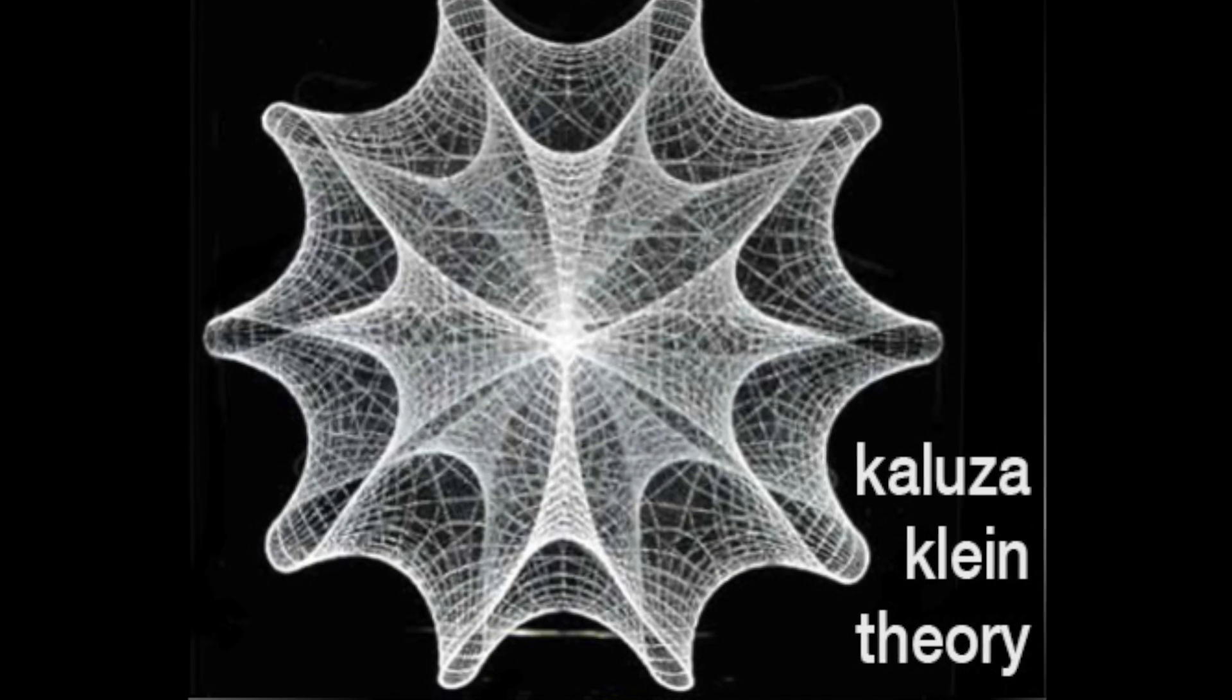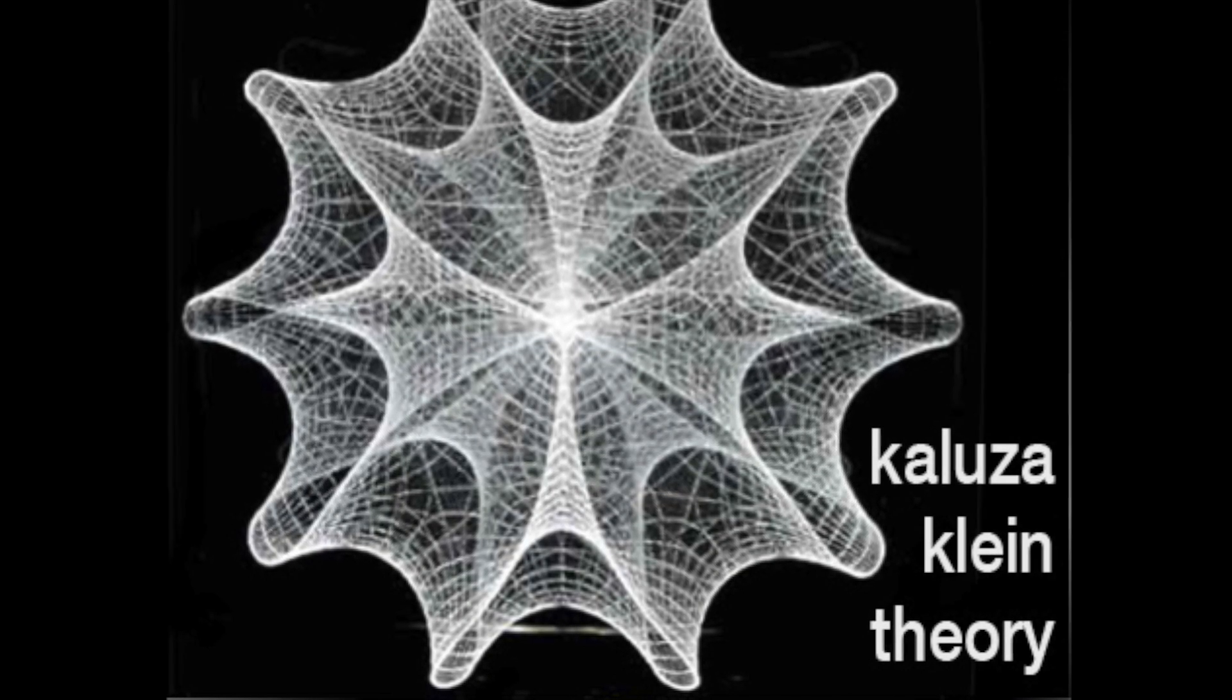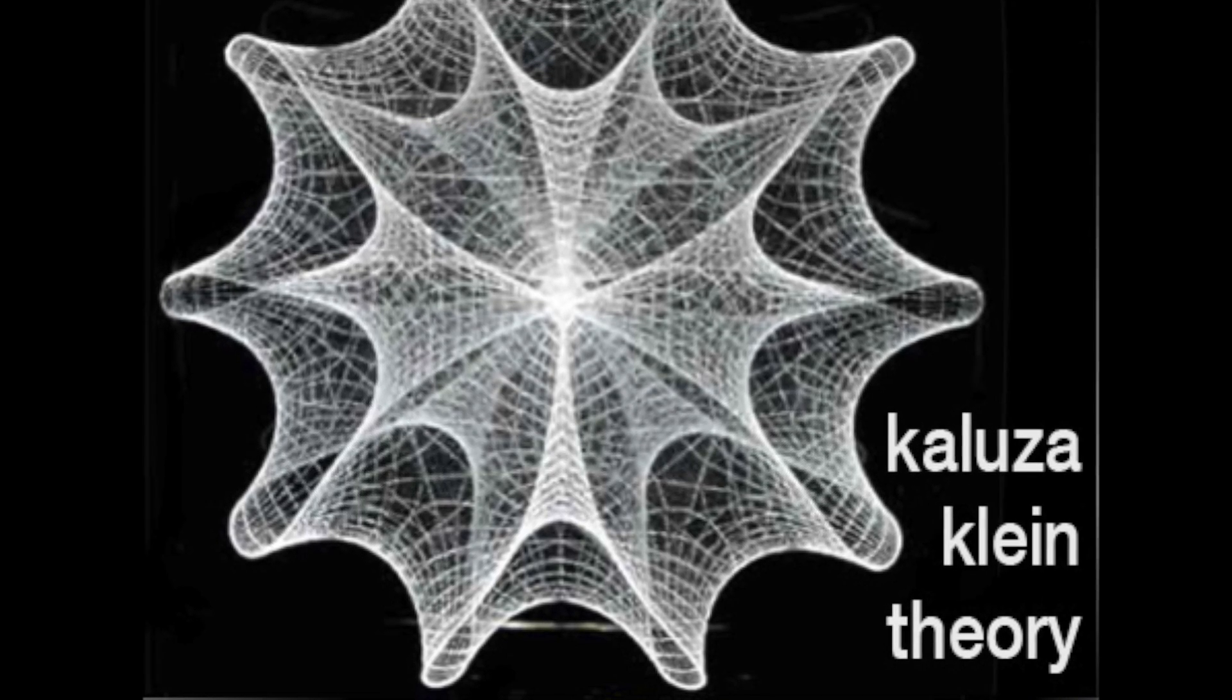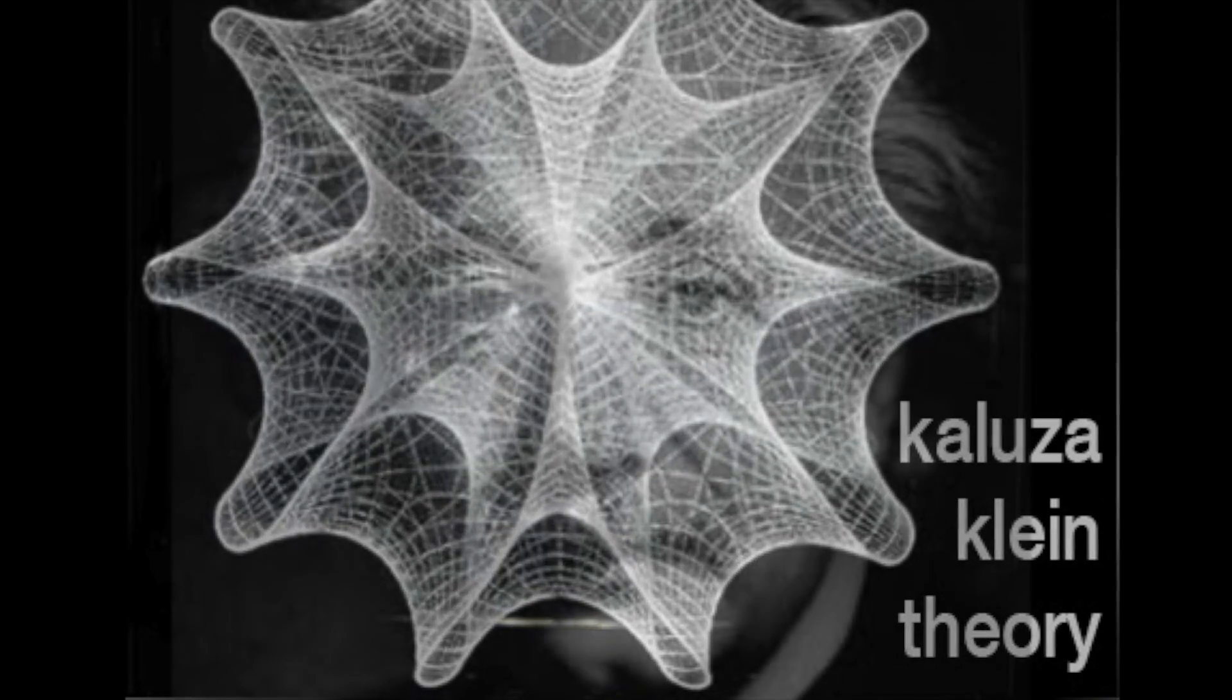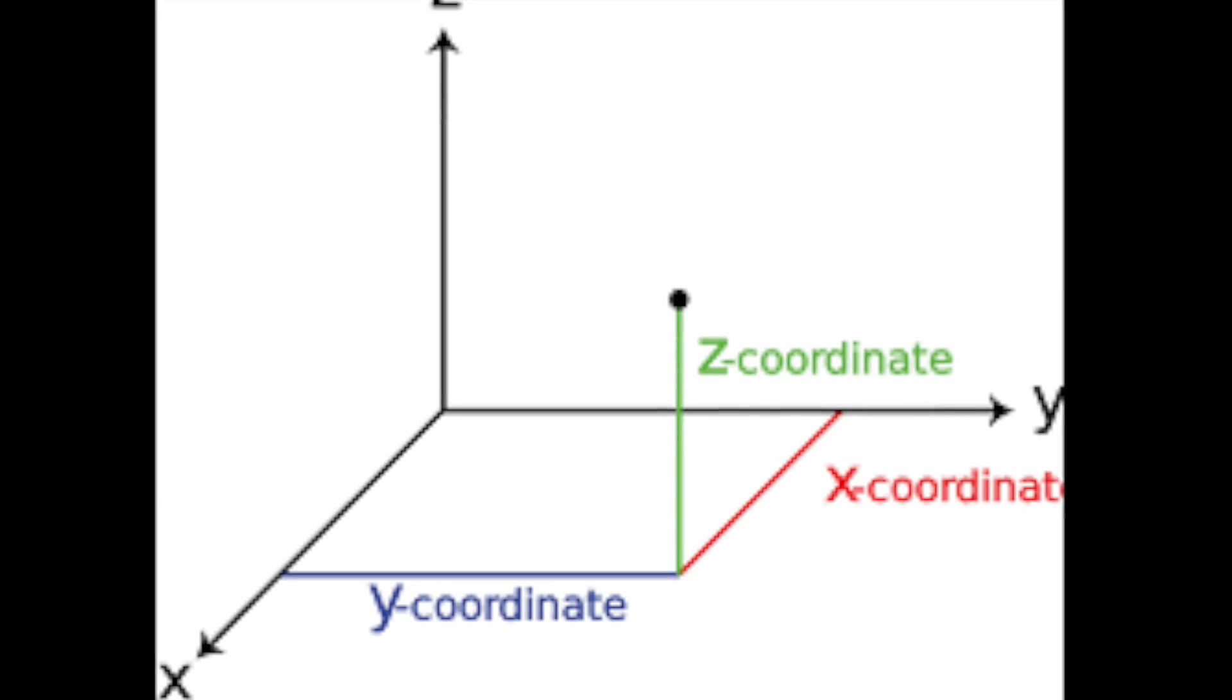Extra dimensions. Now, as impossible as they may seem, their existence would revolutionize the world of physics. Albert Einstein created his theory of general relativity with four dimensions in mind, three of space and one of time.